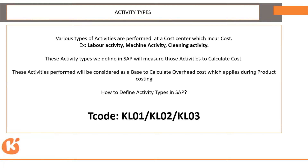How do we define these activity types in SAP? Before we actually incur those costs, we have to define those activity types. The transaction code used is KL01 for creation, KL02 for change, and KL03 for display.